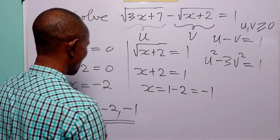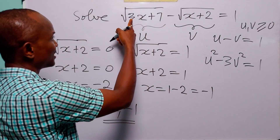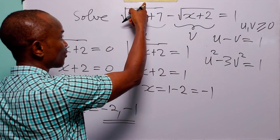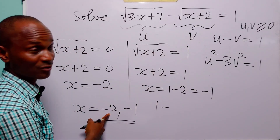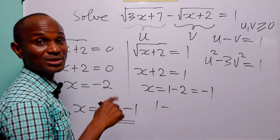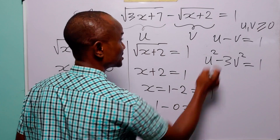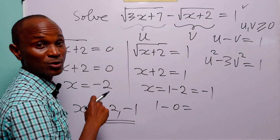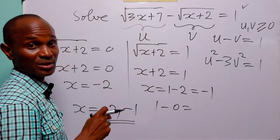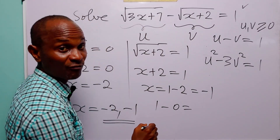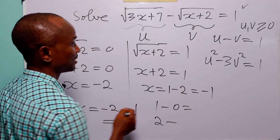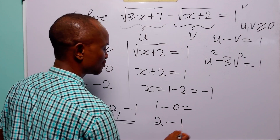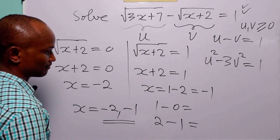We can verify this. When x equals negative 2: 3 times negative 2 is negative 6, and negative 6 plus 7 is 1, and the square root of 1 is 1. Then negative 2 plus 2 is 0, and the square root of 0 is 0. So we have 1 minus 0 which equals 1. When x equals negative 1: 3 times negative 1 is negative 3, negative 3 plus 7 is 4, and the square root of 4 is 2. Then negative 1 plus 2 is 1, and the square root of 1 is 1. So we have 2 minus 1 which equals 1. Both solutions check out.